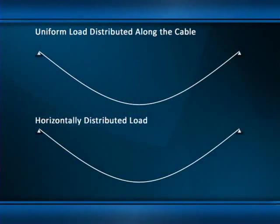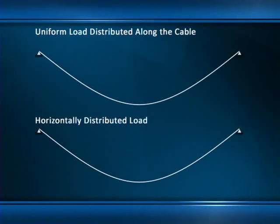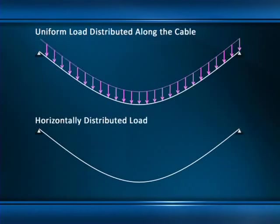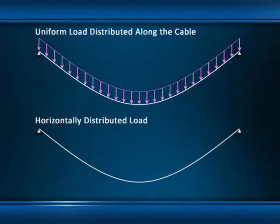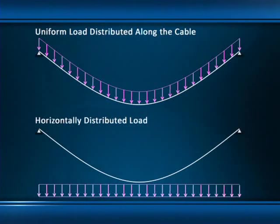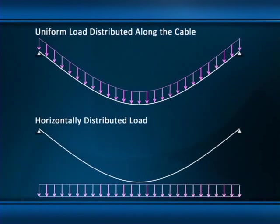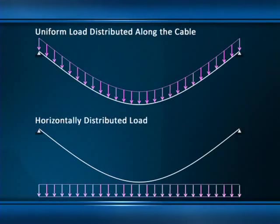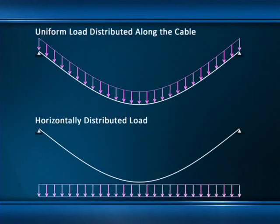There are two basic cable configurations we'll consider. The first is a cable that supports a uniform load distributed all along the cable's length. The second is a cable that supports a horizontally distributed load suspended below it. These two configurations might seem like essentially the same thing, but they aren't — there's a subtle difference in the loading and in the mechanics.